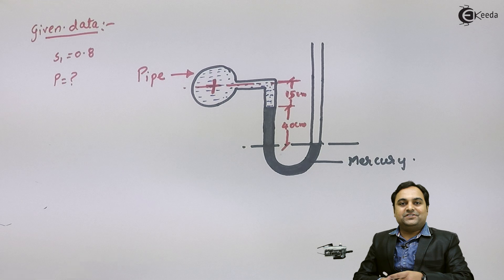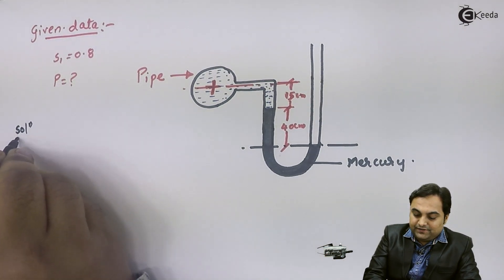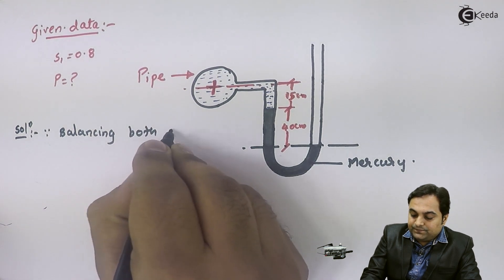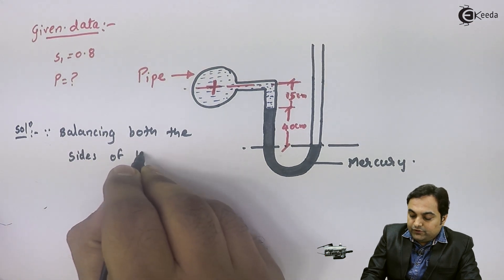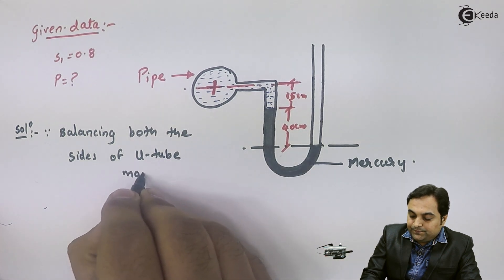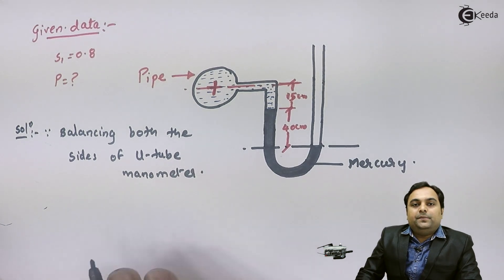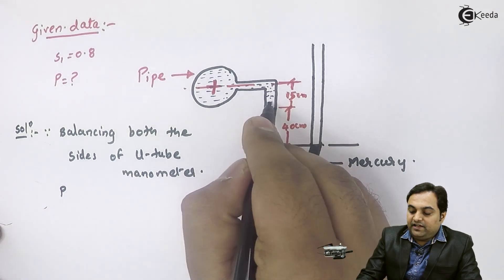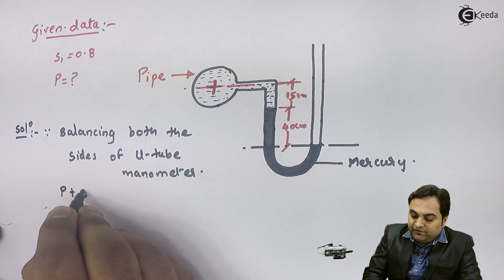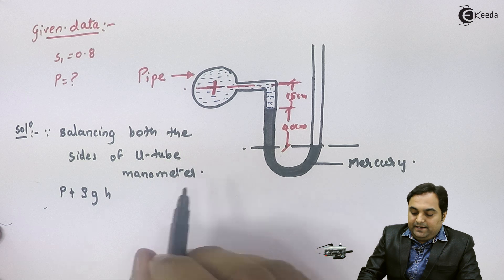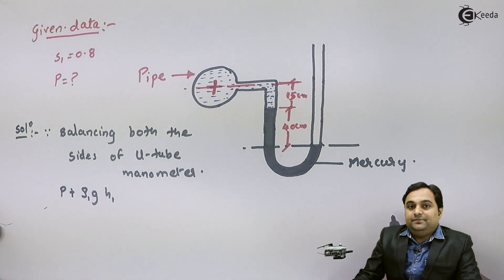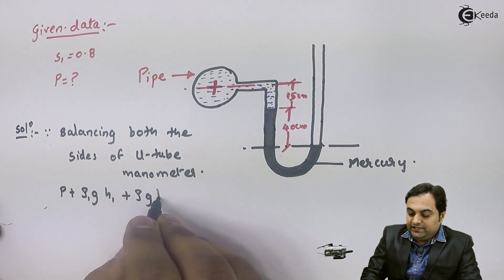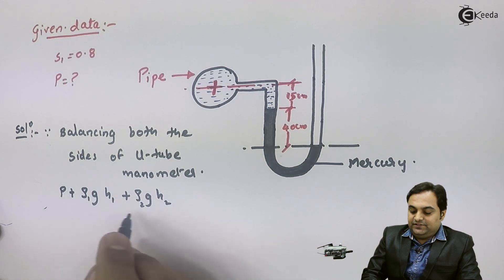In the solution, since we are balancing both sides of the U-tube manometer, I'll start from the pipeline. Inside that we have a pressure P. At the same time we have this fluid column of 15 cm height, so its pressure will be ρ·g·H₁. In the left limb we also have mercury of 40 cm height, so its pressure will also be added: plus ρ·g·H₂ for mercury.